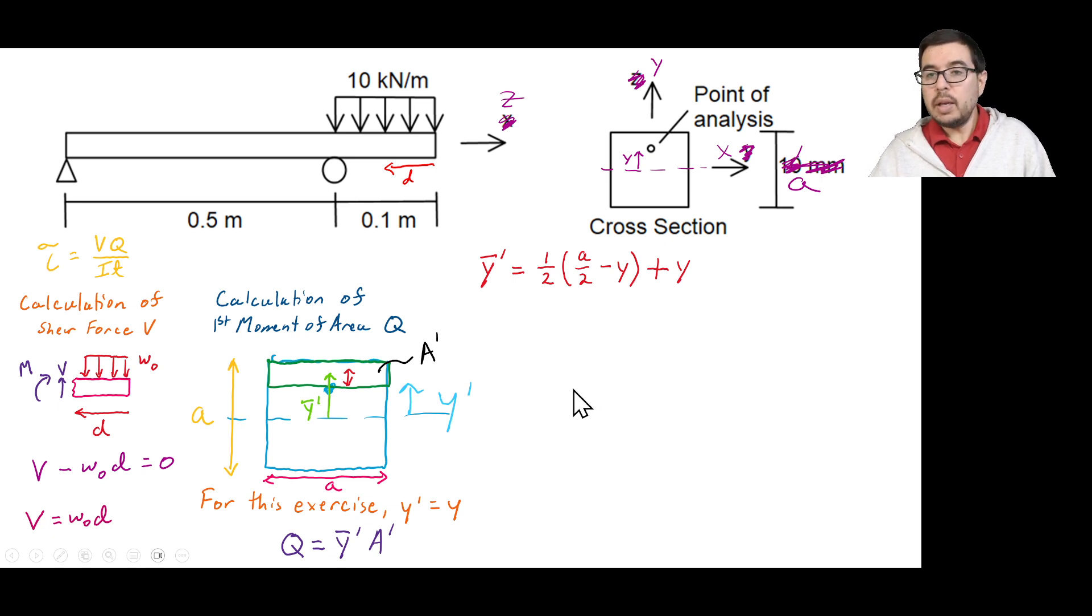For the area, a prime, we have the width, and that's going to be multiplied by this thickness, which we calculated previously when we were doing the y bar prime. So that's going to be the a over 2 minus y, but not times 1 half, because we want this entire thickness or this entire height. And probably should use height, probably should just stop saying thickness. So now we have y bar prime and a prime, so we can calculate q.